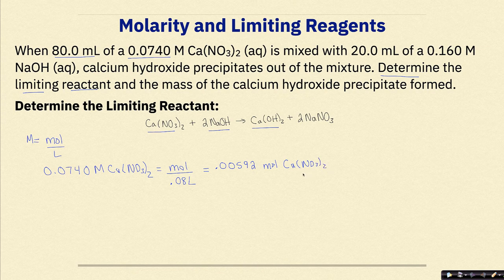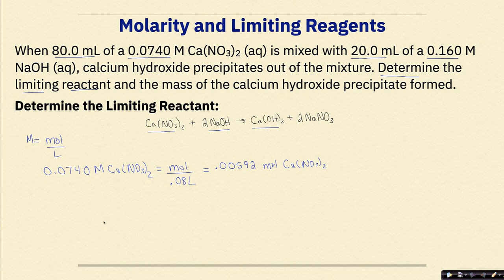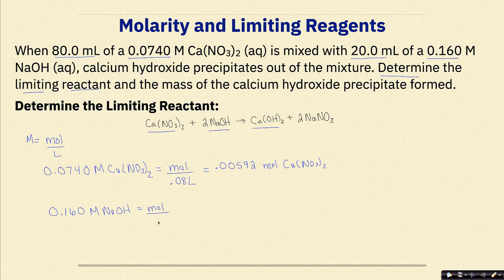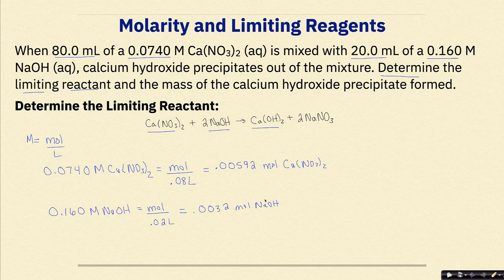I'll make sure to label everything carefully so I don't mix anything up. Now I take the information about the sodium hydroxide: 0.160 molar NaOH in 20 milliliters, which converts to 0.02 liters. Solving for moles, I get 0.0032 moles of NaOH. So all I've done at this point is taken the given information and solved for moles of each reactant.